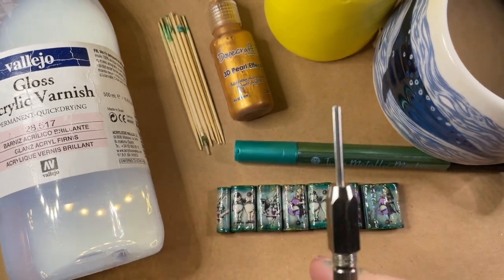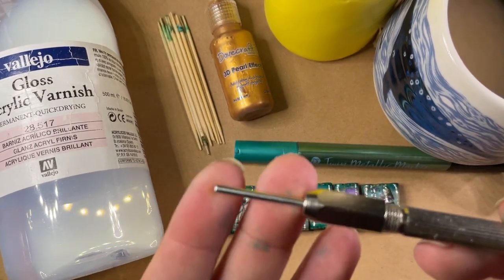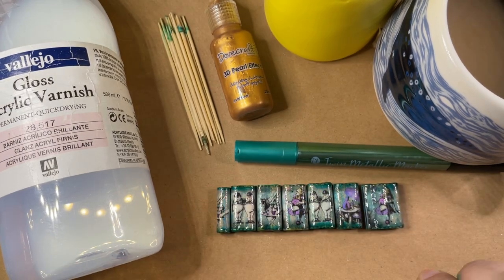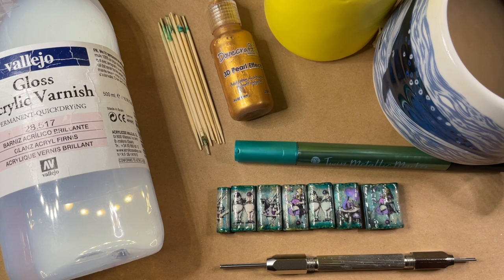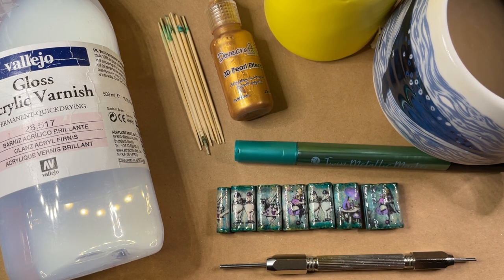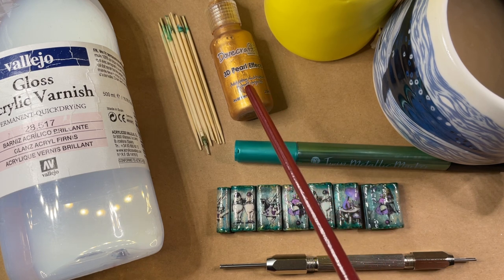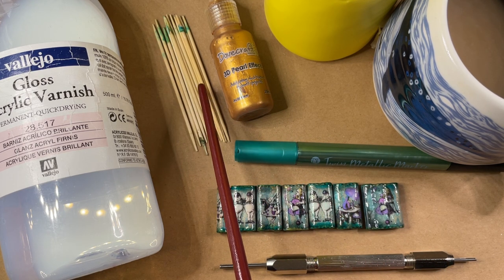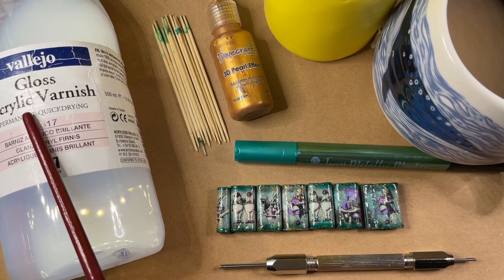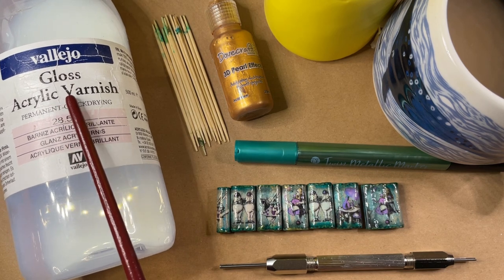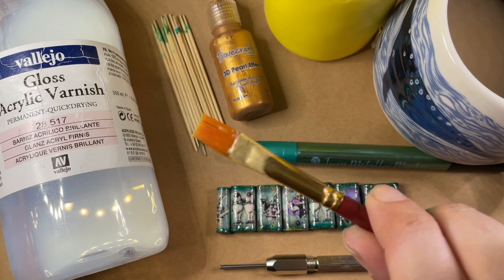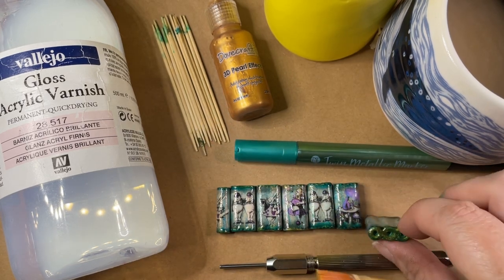So let's start with the tools. I'm going to be using this paper bead roller. I will leave a link to it in the description box and this particular size is a two and a half millimeter one. I've also got some glue which is just in that yellow pot. I've got some cocktail sticks which I'm going to be using to glaze my beads with later on. I've got my Vallejo gloss acrylic varnish that I'm going to be painting on. Obviously a trusted paintbrush, couldn't do it without that.